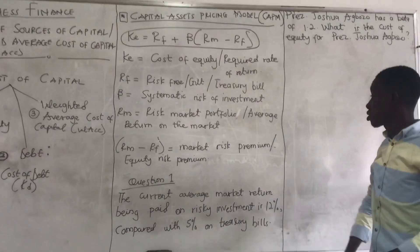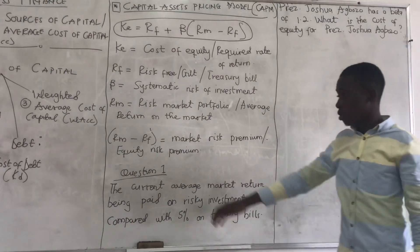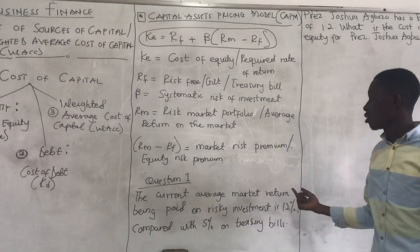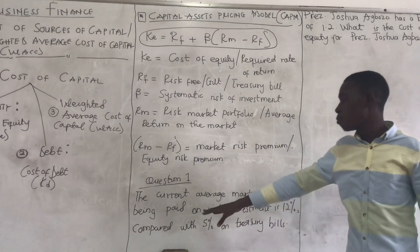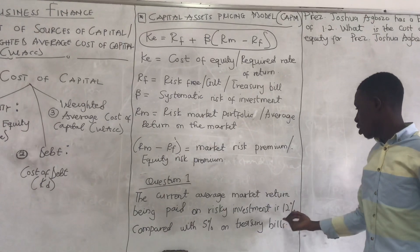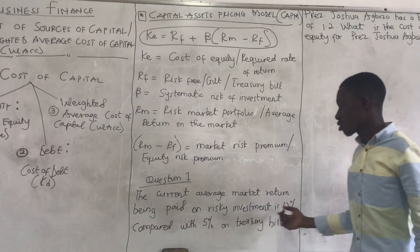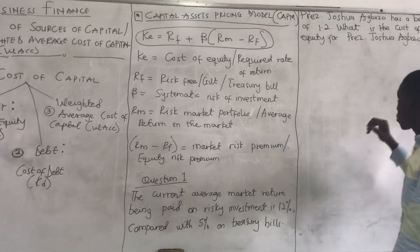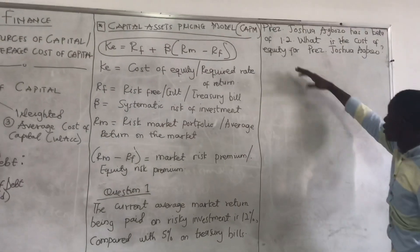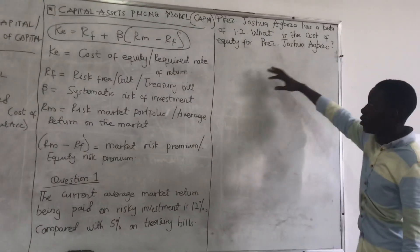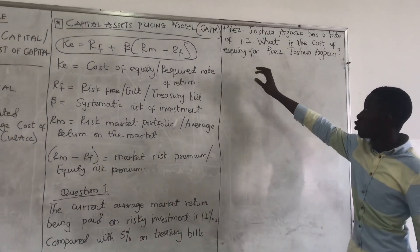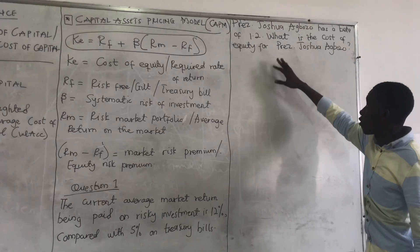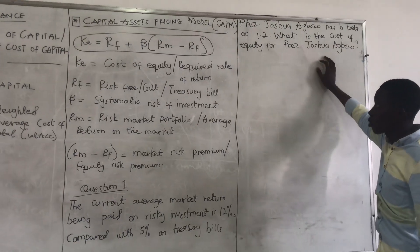Let's start with Question One. The current average market return being paid on risky investments is 12%, compared with 5% from treasury bonds. Peres Jousha Akuzu has a beta of 1.2. What is the cost of equity for Peres Jousha Akuzu?